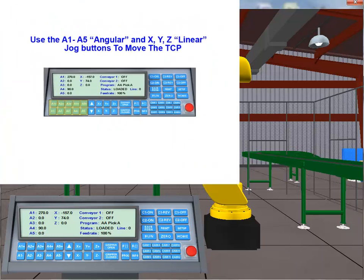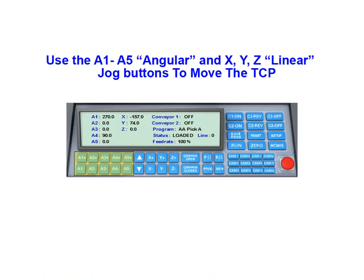The A1 through A5 jog buttons are used for angular motion. Linear motion is accomplished by jogging with the X, Y, and Z buttons.